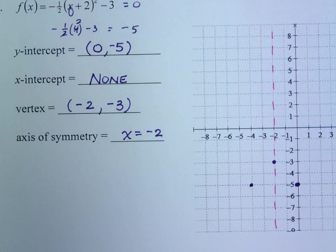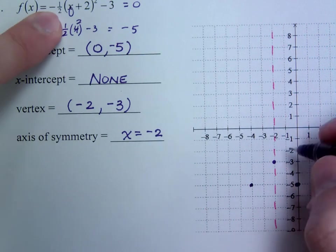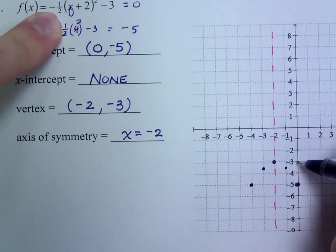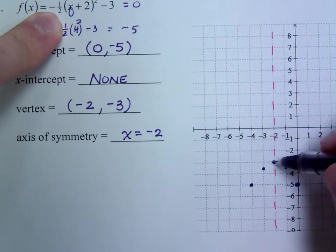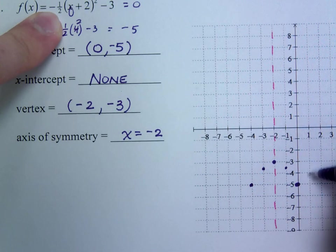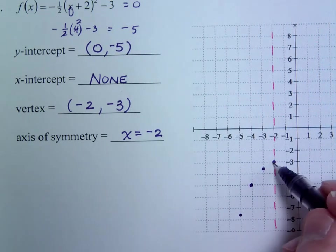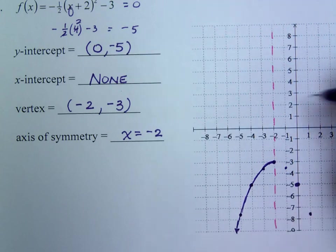Now, I think we know enough about these parabolas to get other points. So if I went at 1 squared, 1 squared would be 1. But the 1 half means I'm going to do half of that. Reflect that across the line of symmetry. 2 squared is 4, but half of 4 is 2. So that matches up. My y-intercept makes sense. If I go at 3, 3 squared is 9. Half of 9 is 4 and a half. And I can reflect that back over here. So this is my parabola.